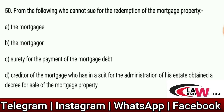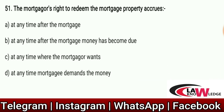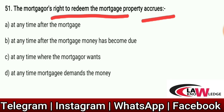Q50: Who cannot sue for redemption of the mortgage property? Option A: The mortgagee. Option B: The mortgager. Option C: Surety for the payment of the mortgage debt. Option D: Creditor of the mortgager who has obtained a decree for sale of the mortgage property. Correct answer is B — the mortgager cannot sue for redemption of the mortgage property. Q51: The mortgager's right to redeem the mortgage accrues — at any time after the mortgage money has become due. Correct answer is B.